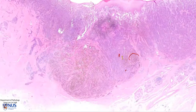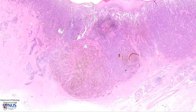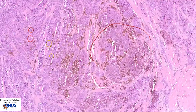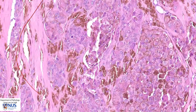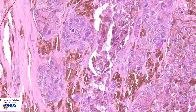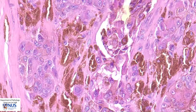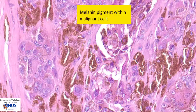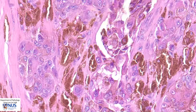Let's look at the area of deepest invasion. Taking a closer look, we can see that some of the melanoma cells have this granular brown pigment within the cytoplasm. This pigment is melanin, and while it is not seen in 100% of all melanomas, it can certainly be seen in many cases.